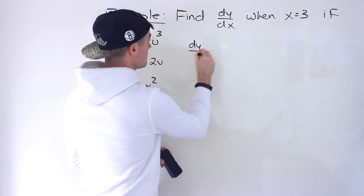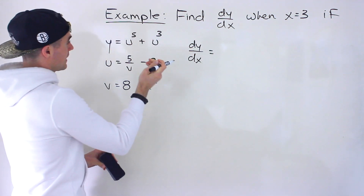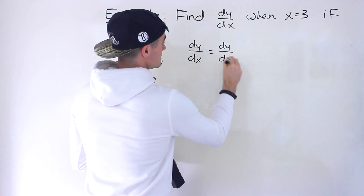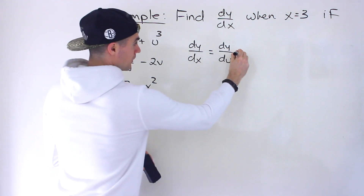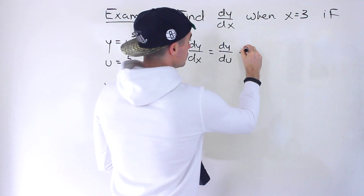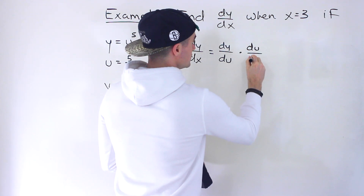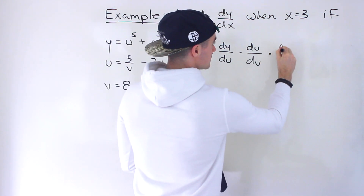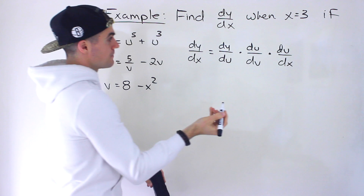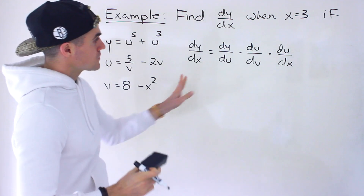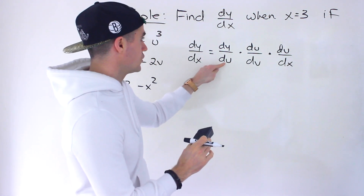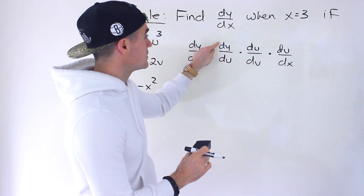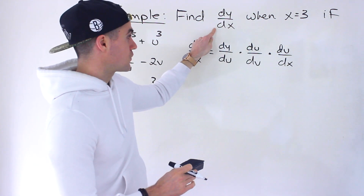We need dy/dx. To get that, we first find dy/du, multiply that by du/dv, and then multiply by dv/dx. Notice that when you multiply these, you can think of crossing out the du's and the dv's, and you're left with dy/dx — exactly what we're being asked for.